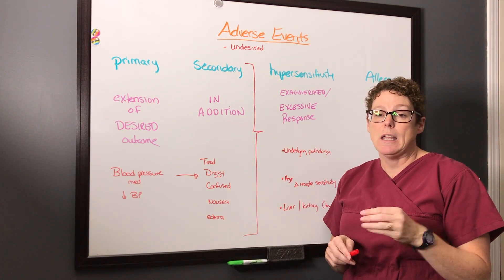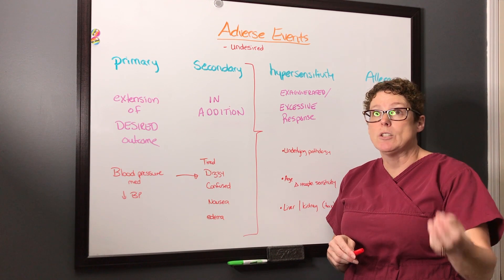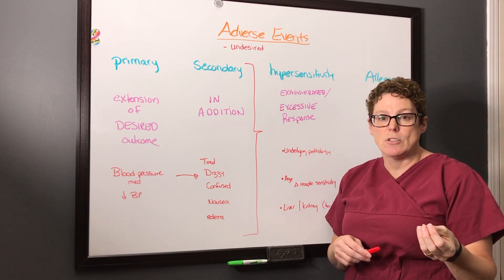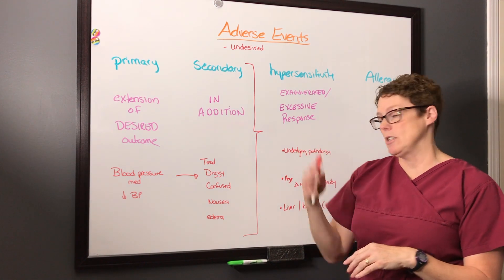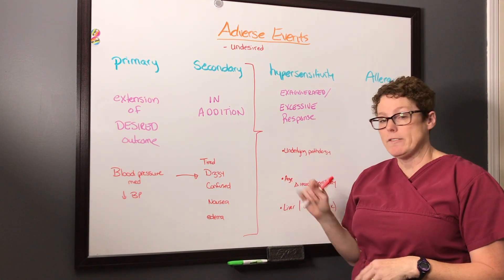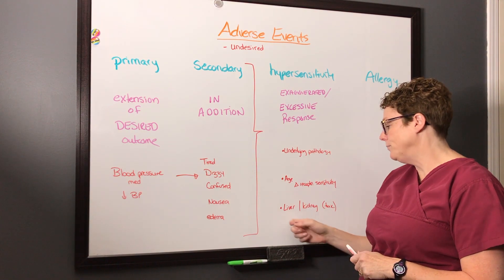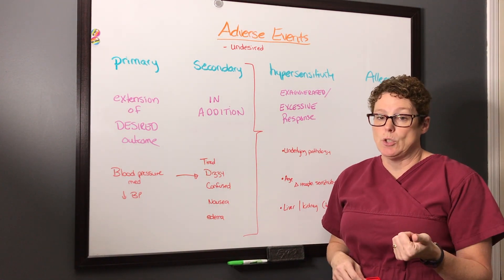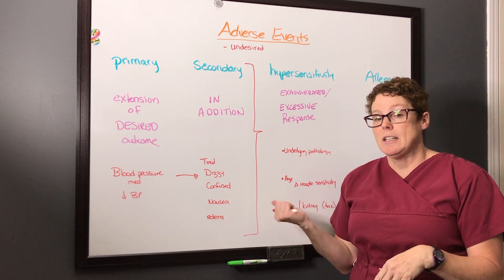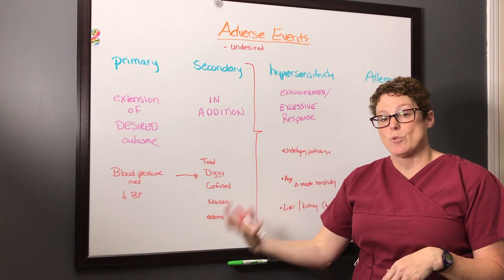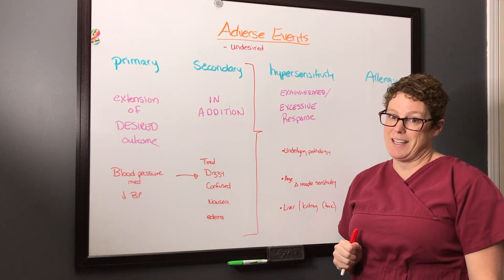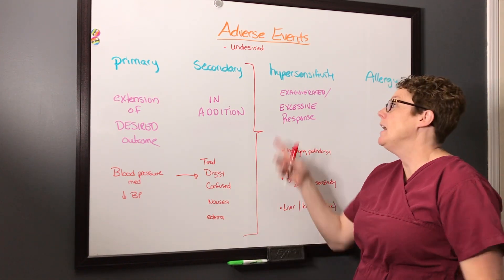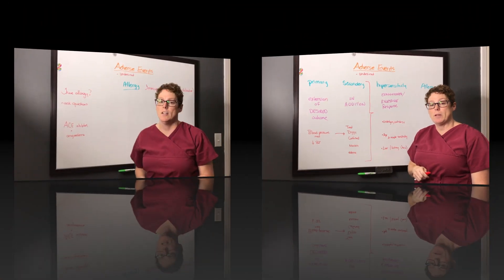This happens a lot with narcotics and medications used to decrease alertness or lower anxiety — sometimes patients become more anxious, and we see that often in our geriatric population. Liver and kidney function are also important: the liver is a major organ for metabolism, and the kidney is a major site for excreting medication, so if there's any pathology there we may end up with a toxic buildup and a hypersensitivity reaction.